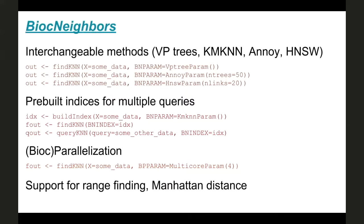More bespoke features include support for range finding — so instead of finding the K nearest neighbors, you can find neighbors within a certain distance. You can also search on the Manhattan distance instead of the Euclidean distance, if you so desire. Basically this allows us to do all our nearest neighbor searching needs within Bioconductor packages. I've already used this in SCDA and SCRAN, so if you're using those packages, you're already probably using BiocNeighbors under the hood.